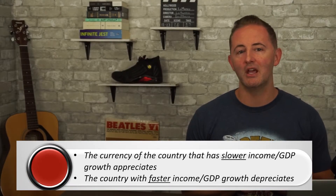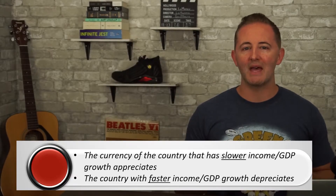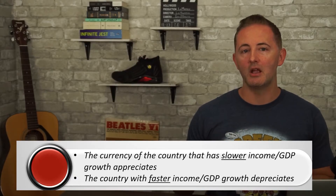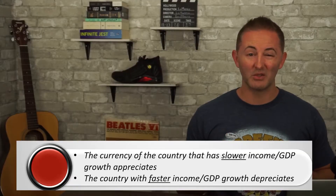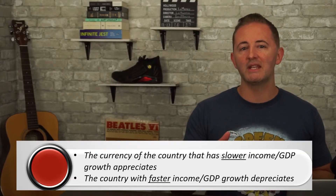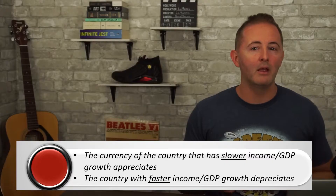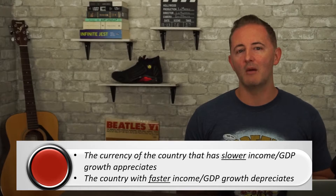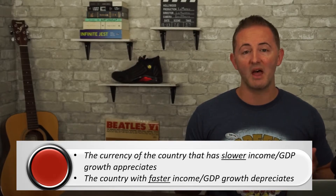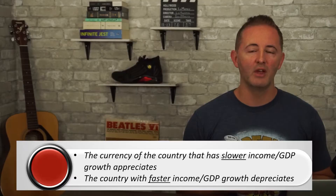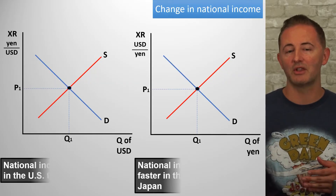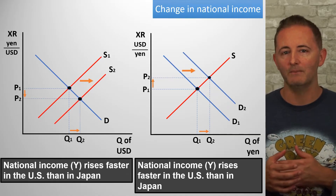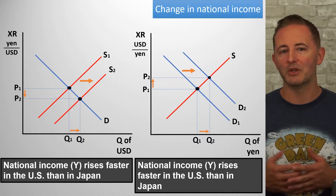Next, changes in national income or real GDP: the currency of the country with slower income or GDP growth appreciates, while the country with faster income growth sees its currency depreciate. There's nothing inherently good or bad about either appreciation or depreciation. If a country's income is rising faster, its people can afford to buy more stuff, including foreign-made goods. So if US GDP is rising faster than Japan's, demand for the yen shifts right and supply of the dollar shifts right — the yen appreciates and the dollar depreciates.